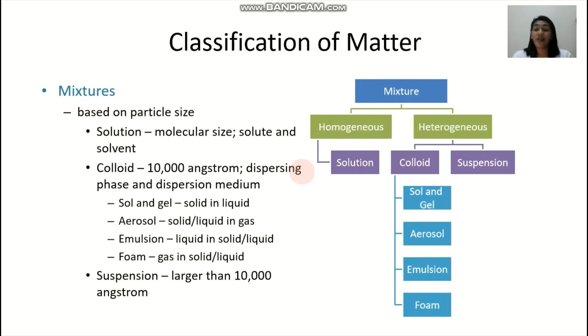Now, classification of mixtures according to the particle size. You have now solution. It is usually a molecular size. You have your solute and your solvent. Then you have your colloids. Their size is actually 10,000 angstrom. So you have two parts of this. Solution, may have solute and solvent. For the colloid, you have your dispersing phase and the dispersion medium.